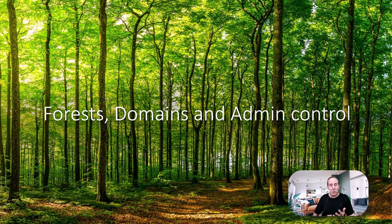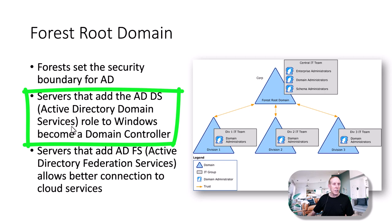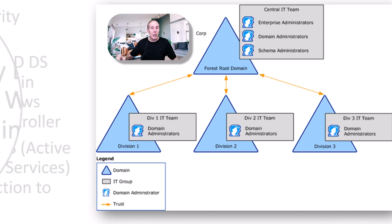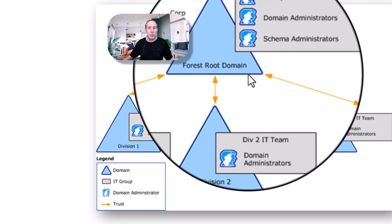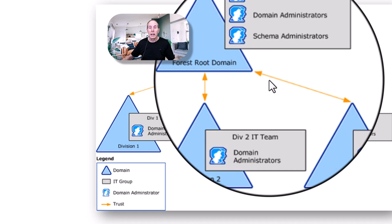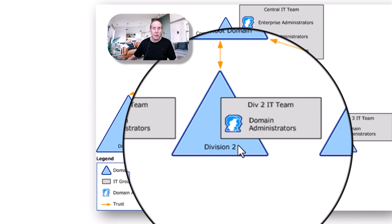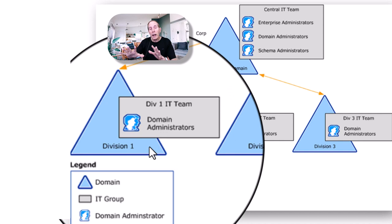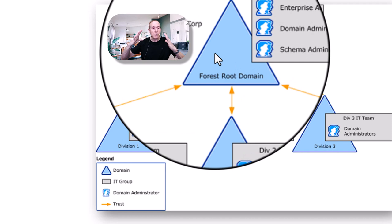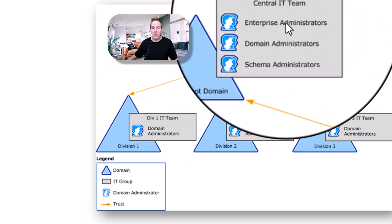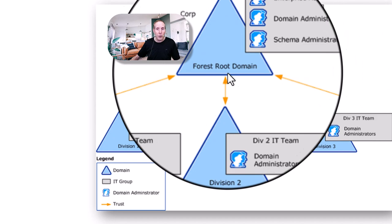Let's lay down the concepts of forest, domains, and admin control. When you install Active Directory Domain Services for the first time, you are going to build a domain structure called a forest root domain — that is the beginning of Active Directory. It doesn't matter whether you have subdomains. Your first one will always be a forest root domain. The forest sets the security boundaries for Active Directory. You'll have an Enterprise Administrator, a Domain Administrator, and Schema Administrators for that forest root domain.